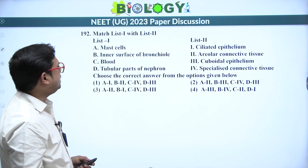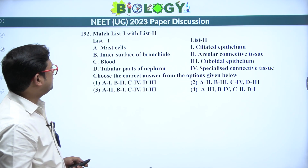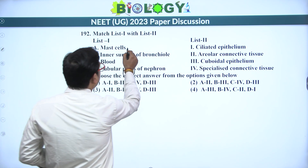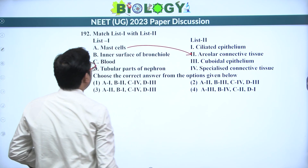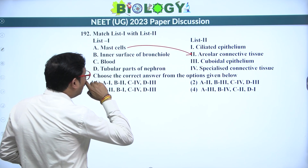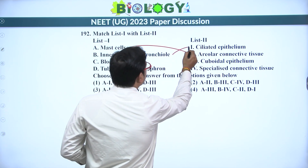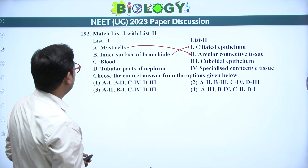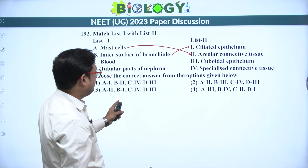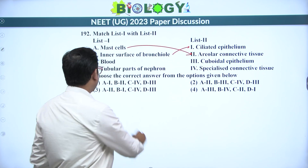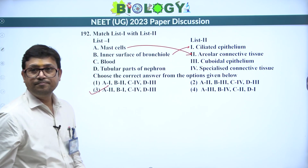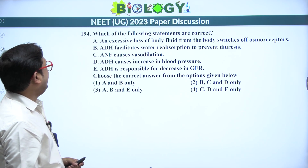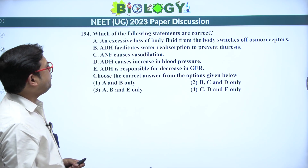Next: match the column. Blood is a specialized connective tissue. Mast cells are present in areolar connective tissue. The inner surface of the bronchiole is lined by ciliated epithelium. So A is 2, B is 1 — answer is 3.